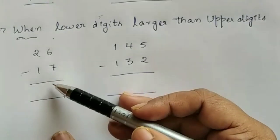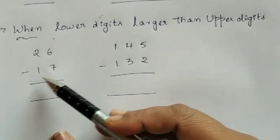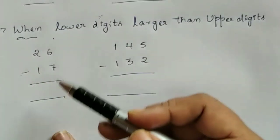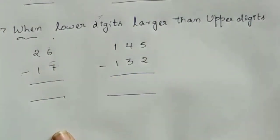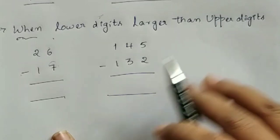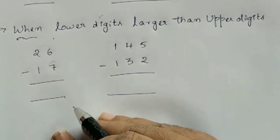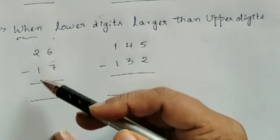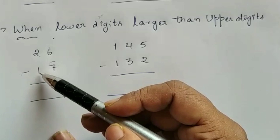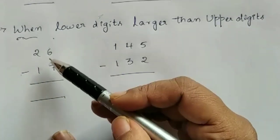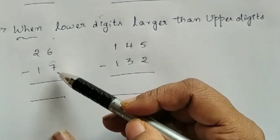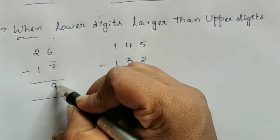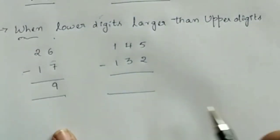Now we will see left-to-right subtraction when lower digits are larger than upper digits. I have taken two examples. For 26 minus 17: 7 is greater than 6, so normally you'd take a borrow — but here there is no need to take a borrow! That is the speciality of this subtraction. Now: 2 minus 1 is 1 — no need to write in the answer corner yet. Think of 1 before 6: that becomes 16. 16 minus 7 is 9. See how easily we can do this!